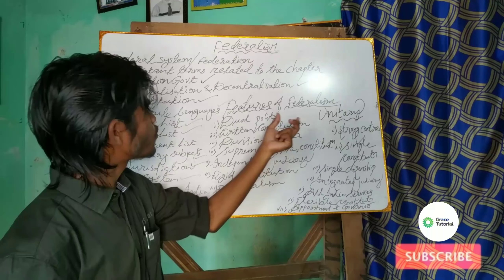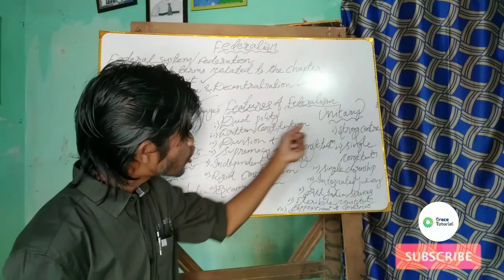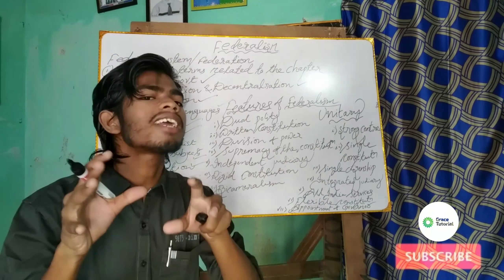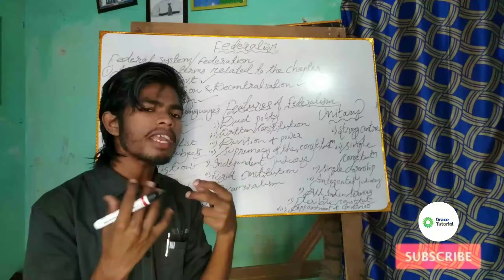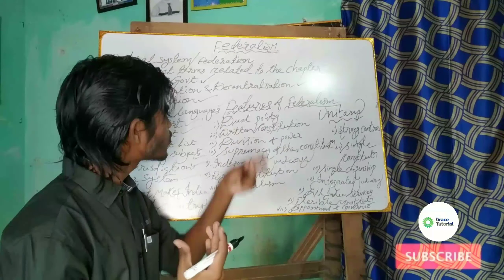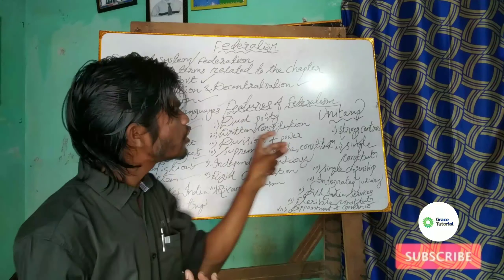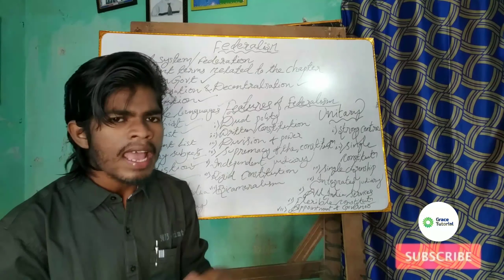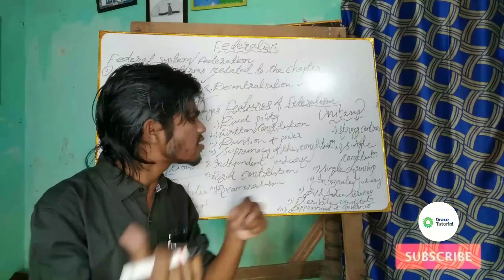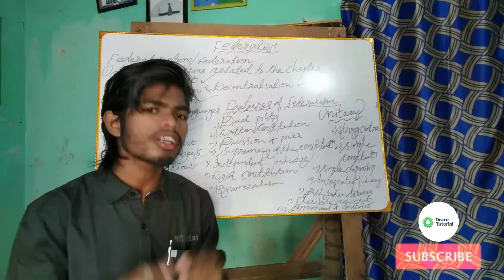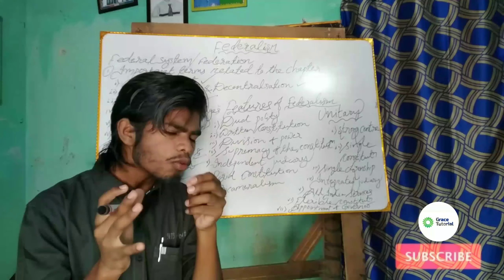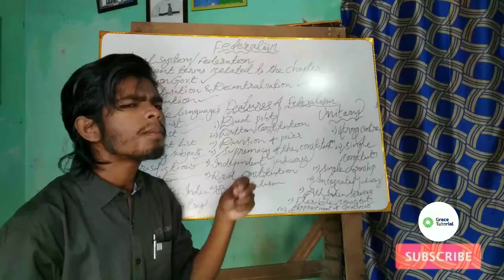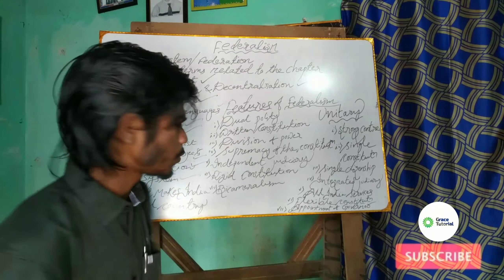Now let us try to understand the features of federalism and the features of a unitary model of government, and the comparison between them. But before coming to the features, let us understand what the term 'federation' refers to.